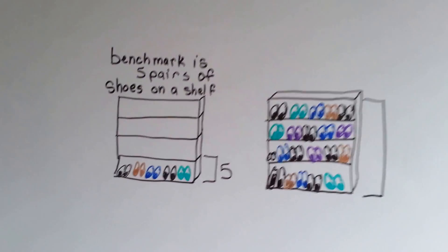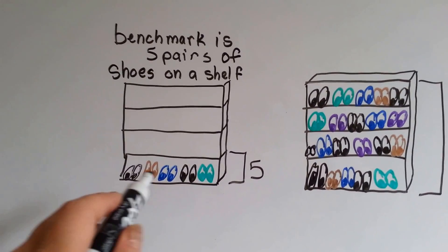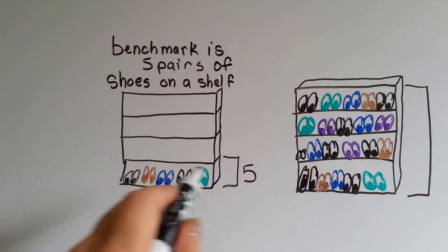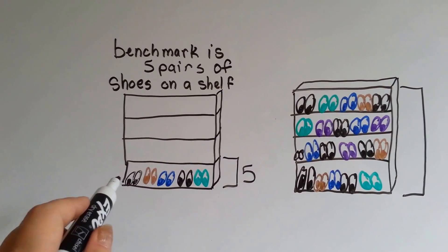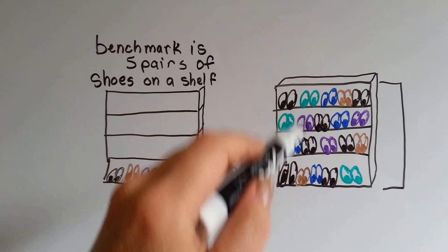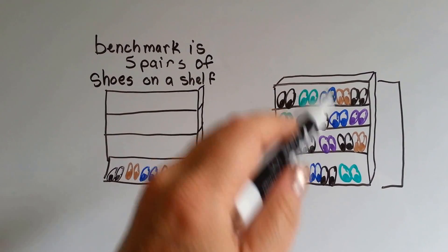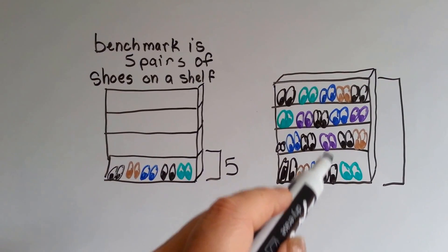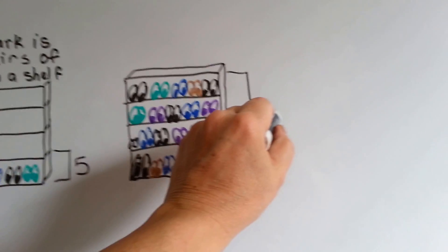Let's take a look at shoes on a shelf. There are five pairs of shoes on this shelf. So our benchmark is each shelf can hold five pairs of shoes. If there's four shelves and each shelf is completely full, we can guess that there's five, 10, 15, 20 pairs of shoes on this shelf.